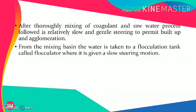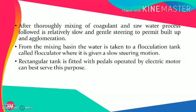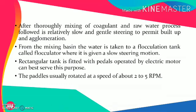Agglomeration means particles coming together, increasing in size, and settling due to that size change. From the mixing basin, the water is taken to a flocculation tank called a flocculator, where it is given a slow stirring motion. The rectangular tank is fitted with paddles operated by electric motors. The paddles are usually rotated at a speed of about 2 to 5 rpm to achieve gentle mixing.